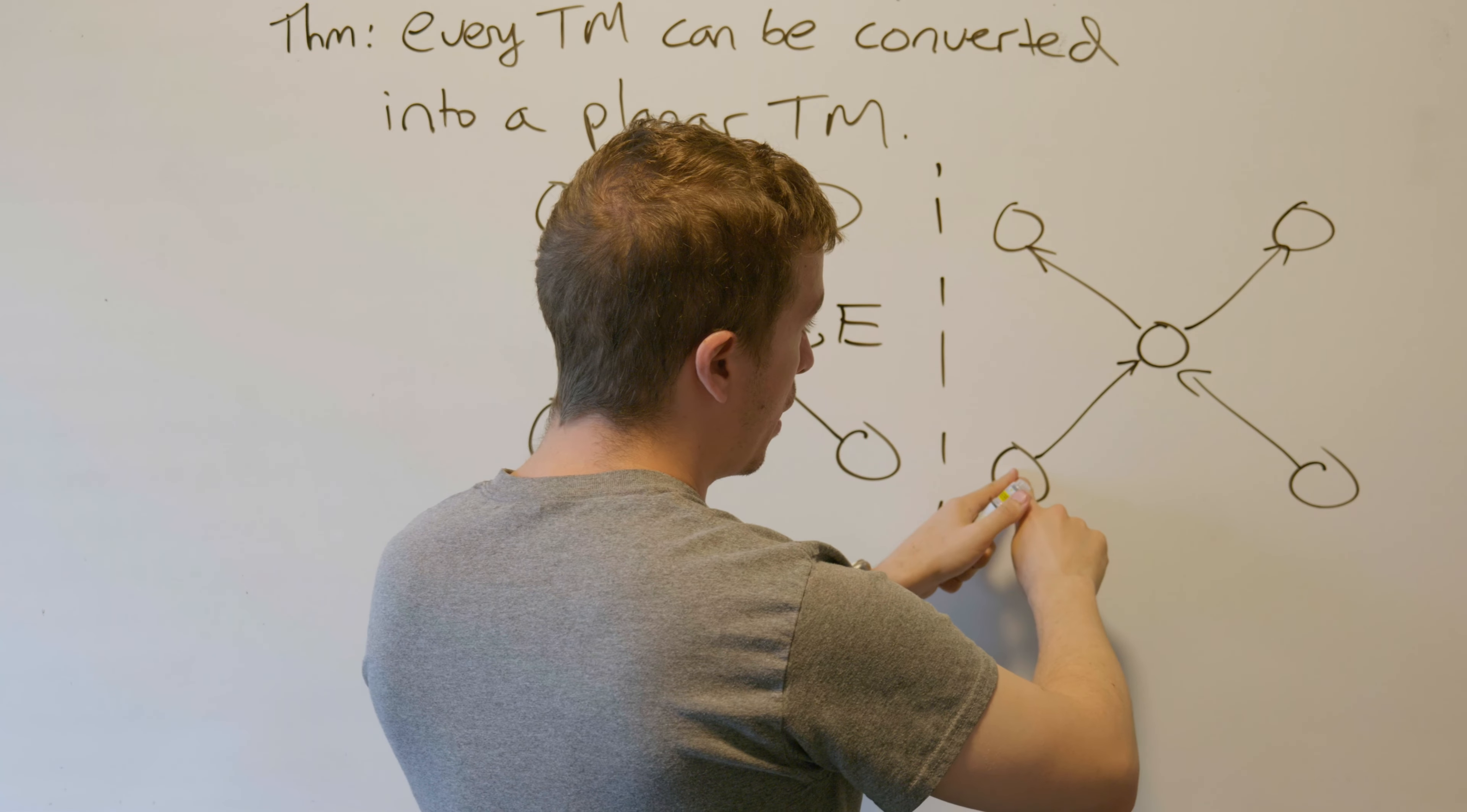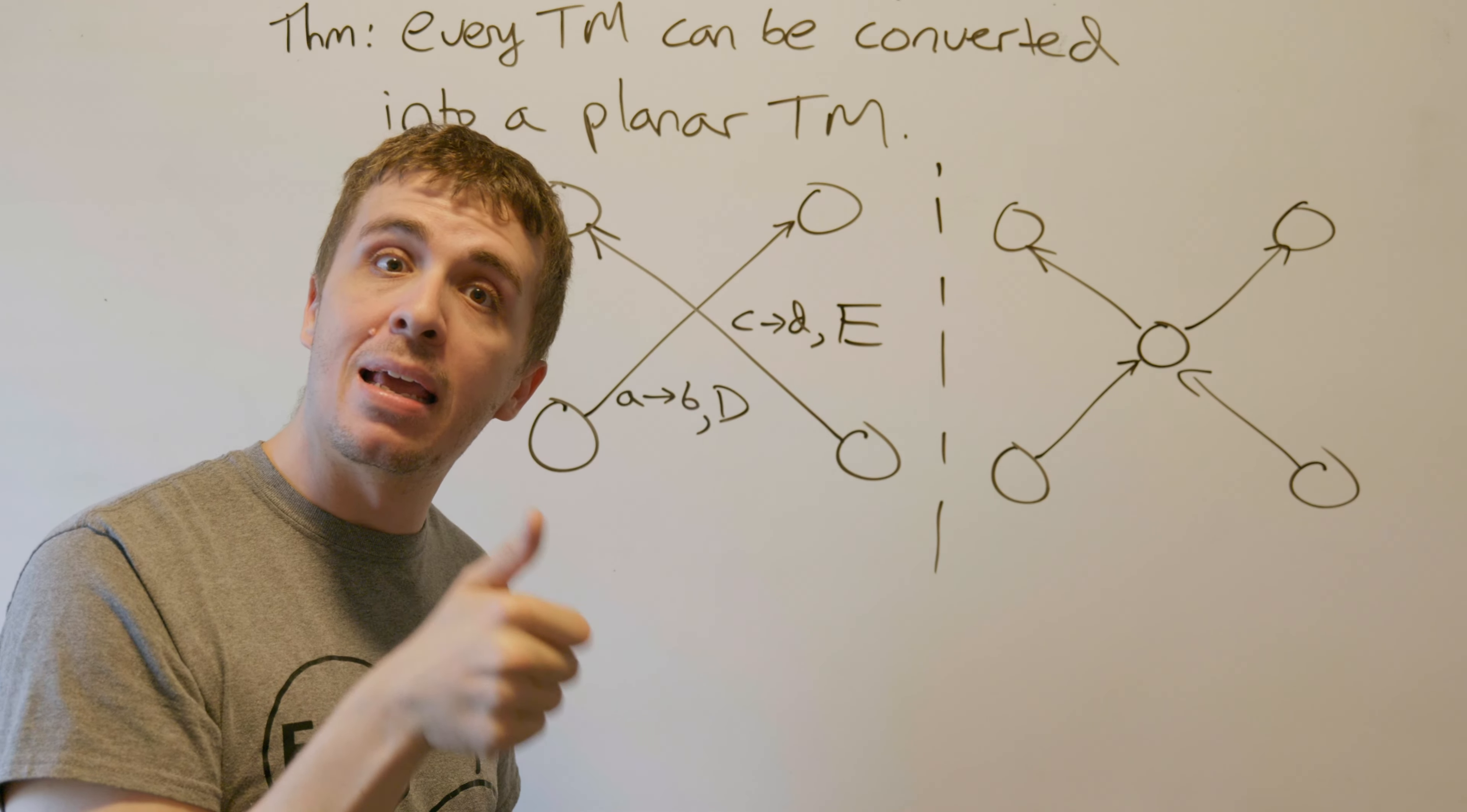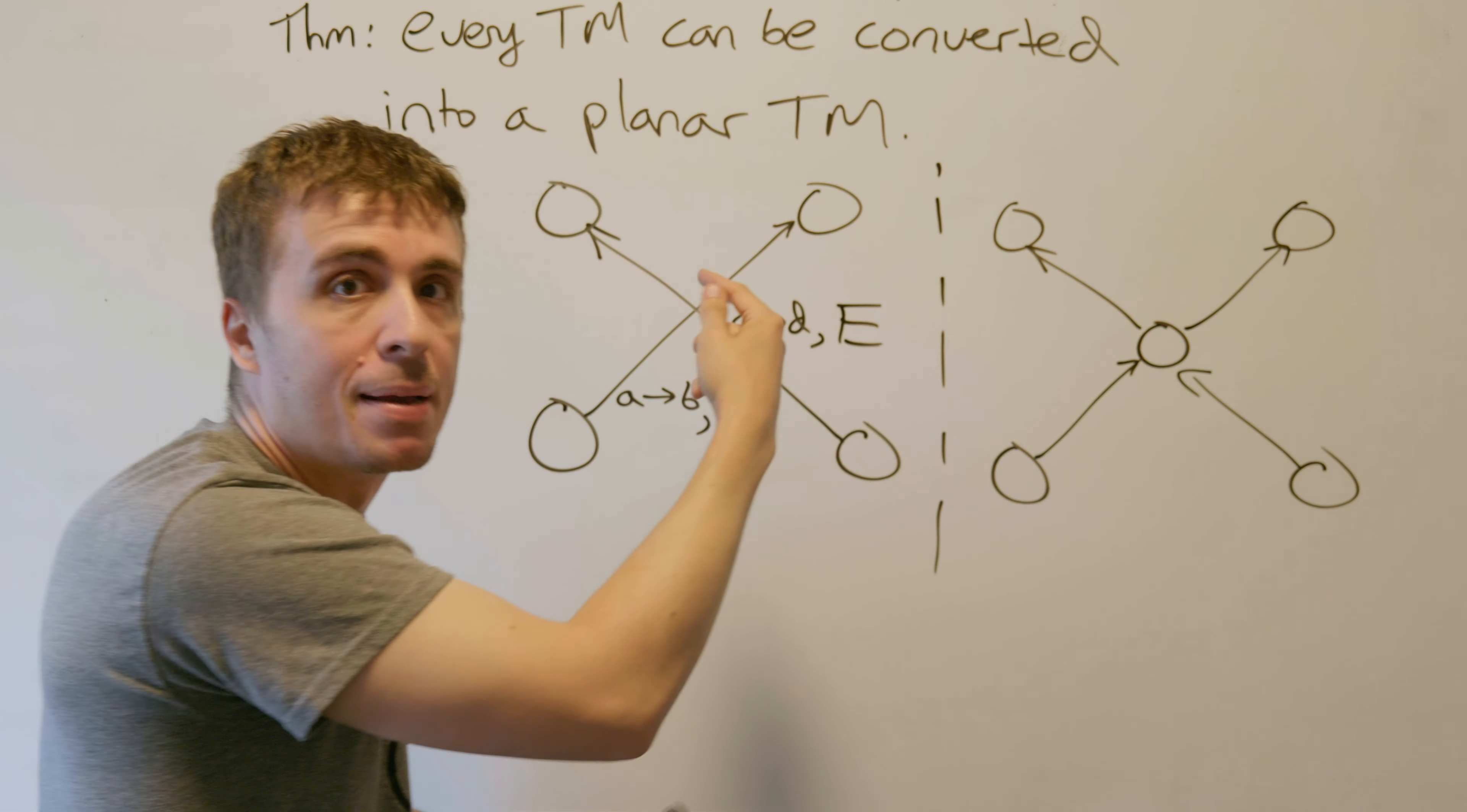If we're here and we end up over here, that means we took two transitions, which means either we took two lefts, two rights, or a left and right or right left. In all of those cases, that is not equivalent to a single left or a single right. No matter what, we need to have an odd number of transitions.